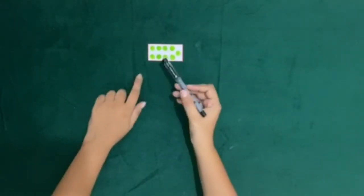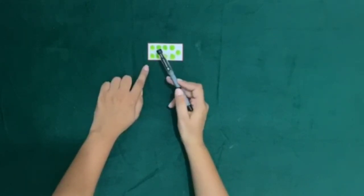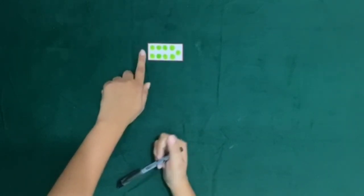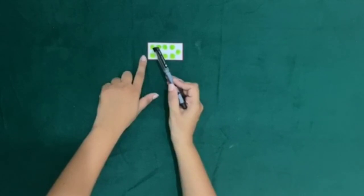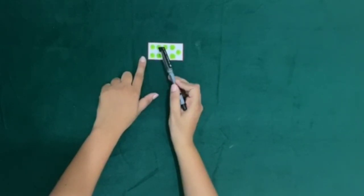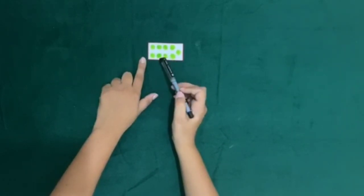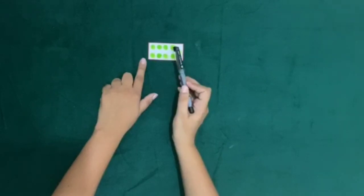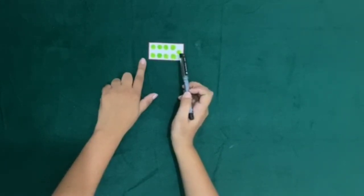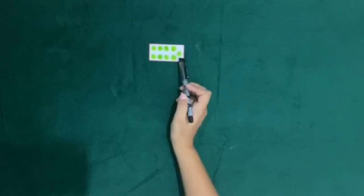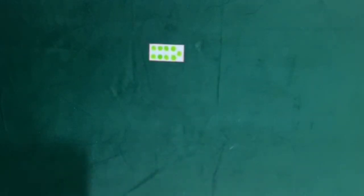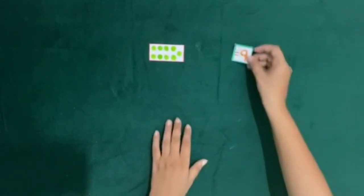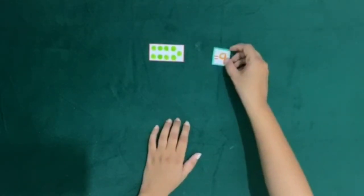Here is a card with a group of dots. Let us count how many dots there are: 1, 2, 3, 4, 5, 6, 7, 8 and 9. So this one card has 9 dots, which means it is equal to 9.